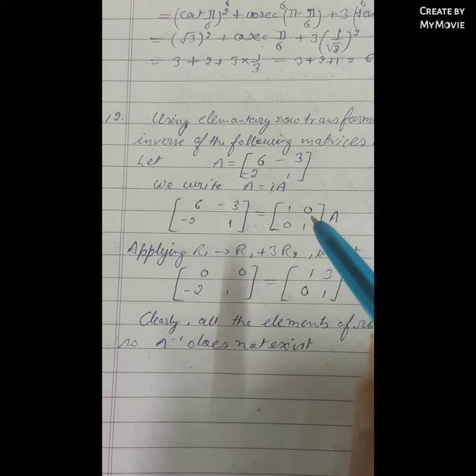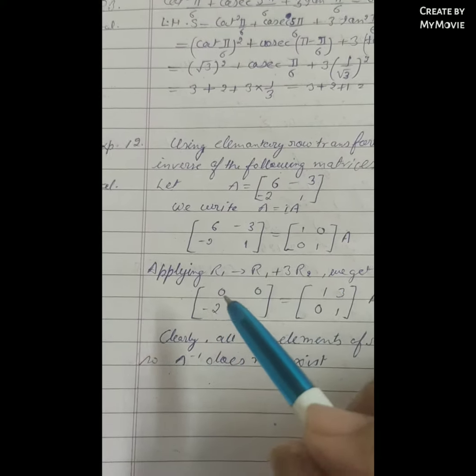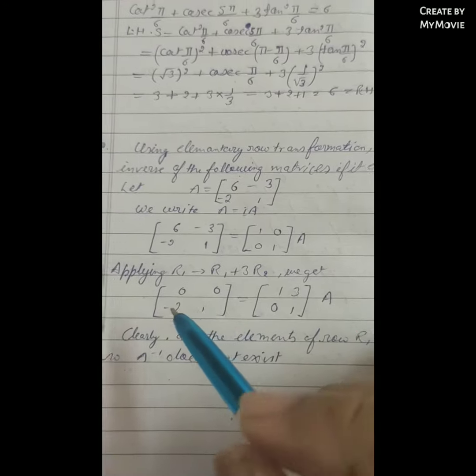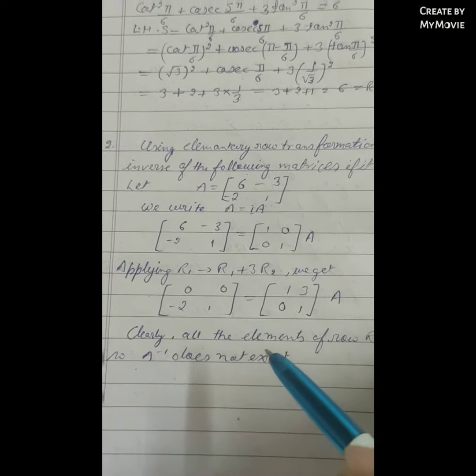So this equals [1, 0; 0, 1] times A. Now the first row's elements are [0, 0]. Clearly, all the elements...